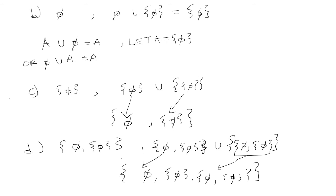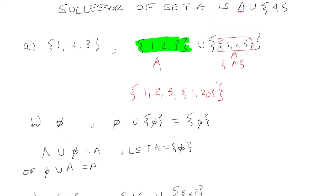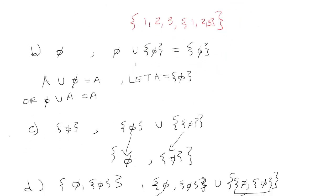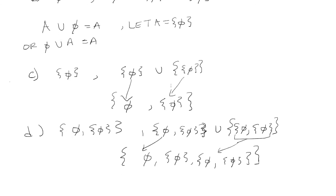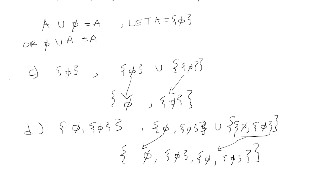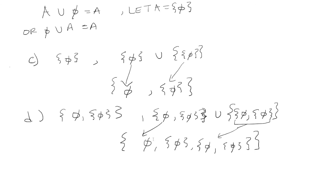To summarize: all you're doing is taking the original set — whatever is in the original set. For part A, the elements in the original set were 1, 2, and 3, and then you add the other set into that. For B, this was a special case because when you do the empty set union with another set, you just get the other set — A union the empty set is just A, so this one was just itself. In the next example, you took the elements in the first set, which is the empty set, and then the elements in the second set, which is the set of the empty set. And for the last one, you took the elements of the first set — this one and this one — and then you just took the elements in the second one, which is this whole thing.